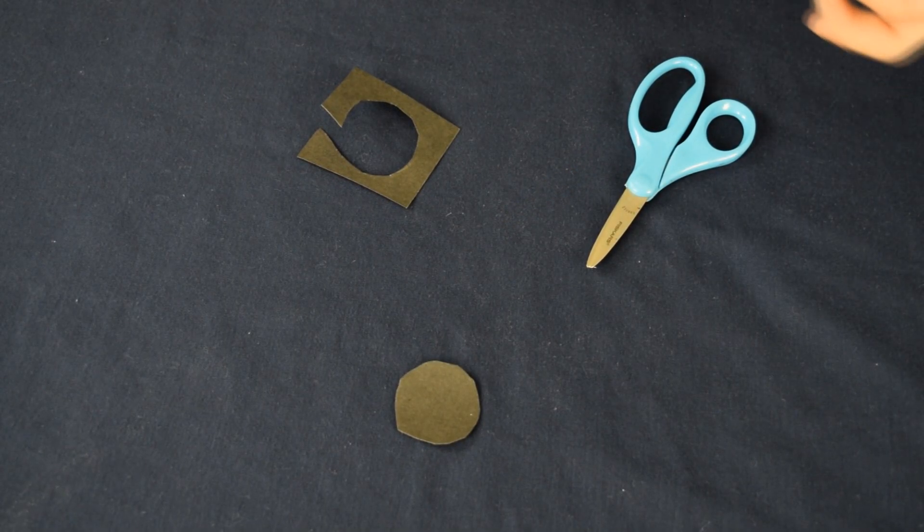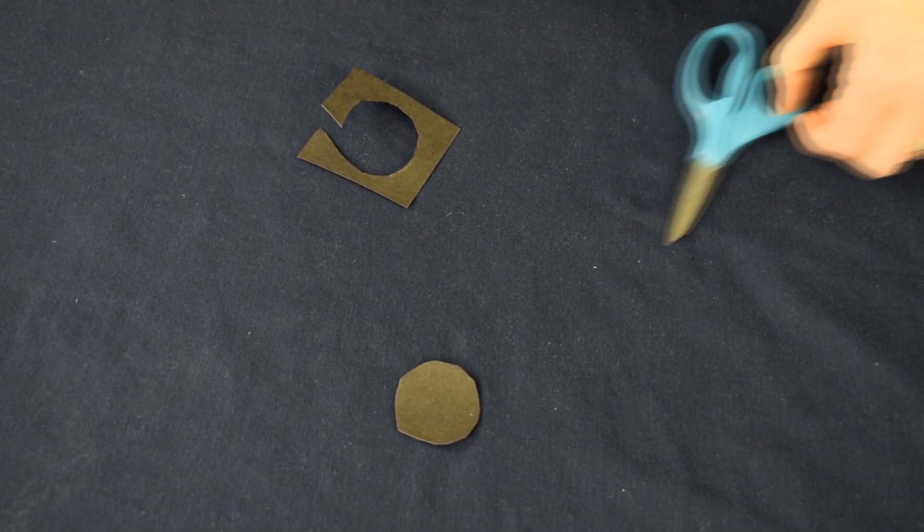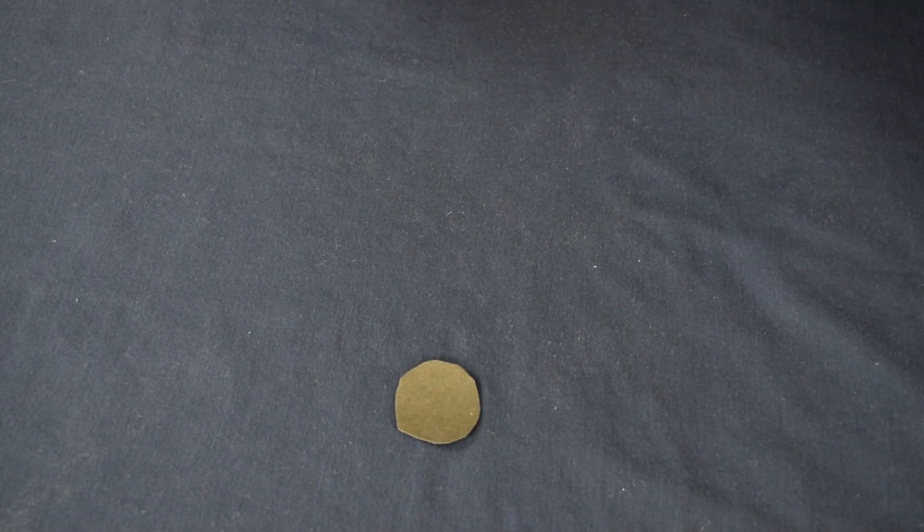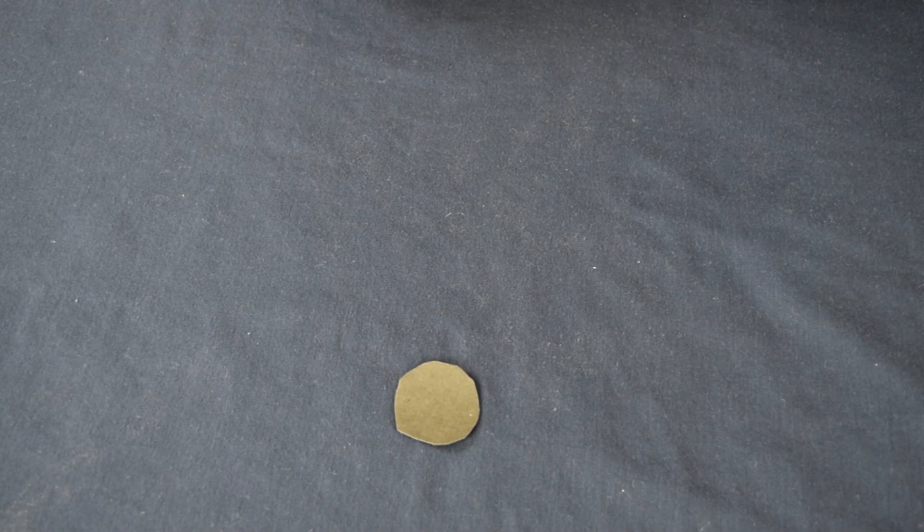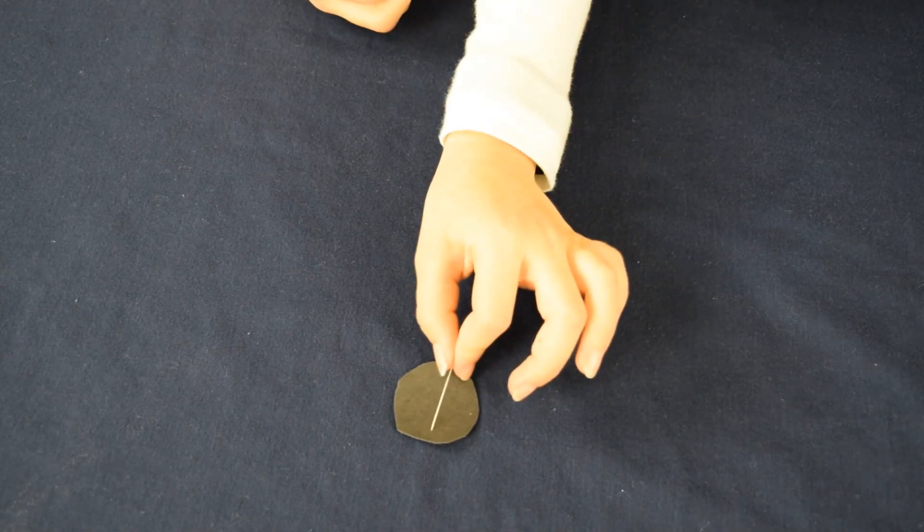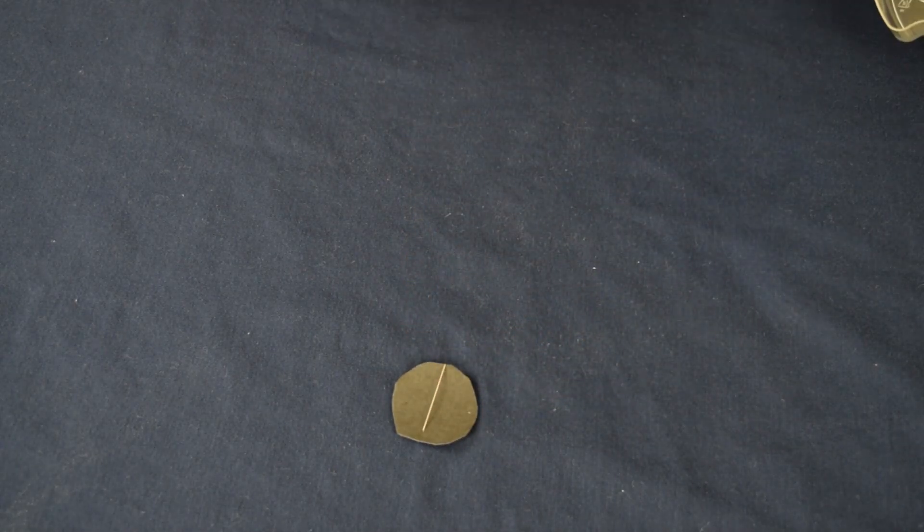After you've cut out your circle, you're going to tape a needle to it. And you're going to tape the needle in the center of the circle. So go ahead and place the needle on the circle and then here's your tape.